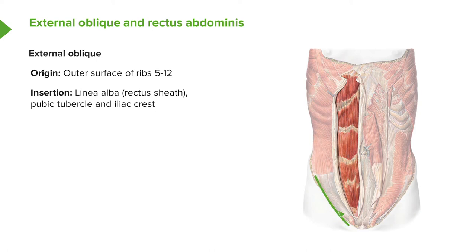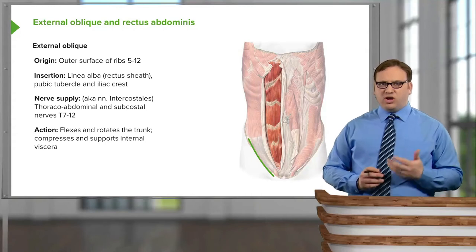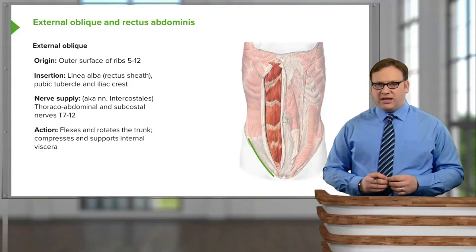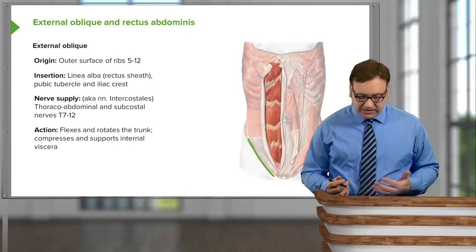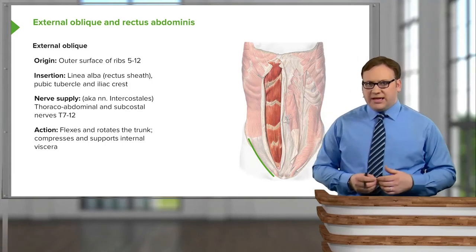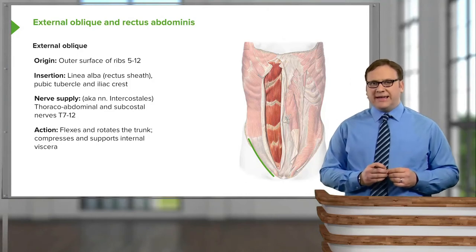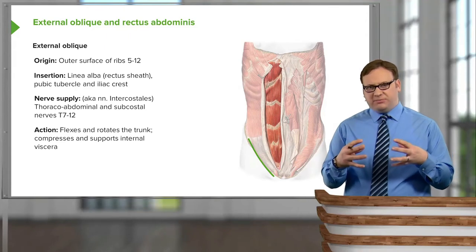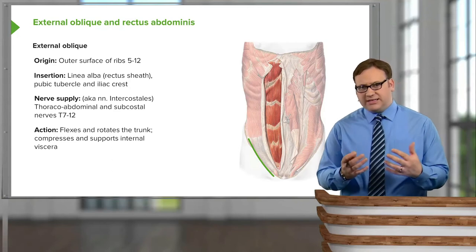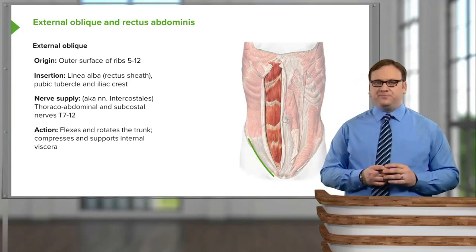External oblique also runs down and attaches to the inguinal ligament, iliac crest, and pubic tubercle. The innervation of this muscle is the thoracoabdominal and subcostal nerves through T7 to T12. These nerves run in this direction to supply external oblique and allow the muscle to contract. The action of these muscles is to flex and rotate the trunk — enabling movement from side to side. Importantly, for all of the muscles we'll cover, they enable the internal contents of the abdomen to be compressed, which is important when we defecate or vomit, increasing pressure within the abdominal cavity to expel contents.